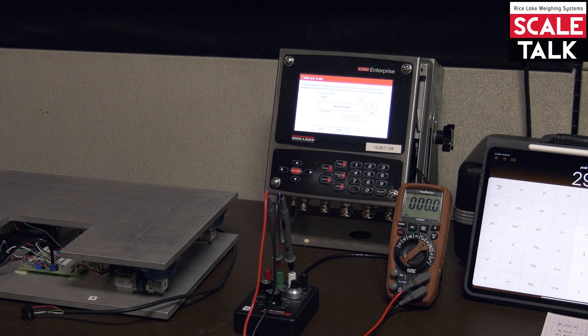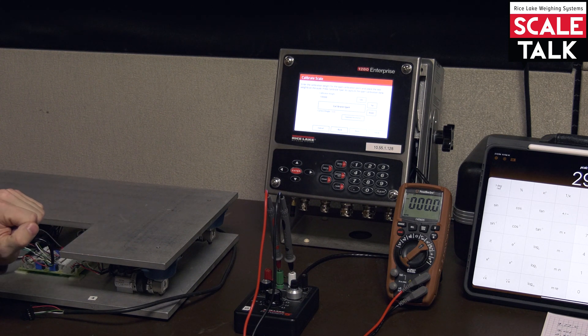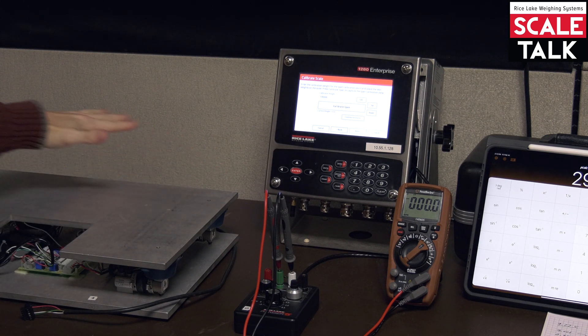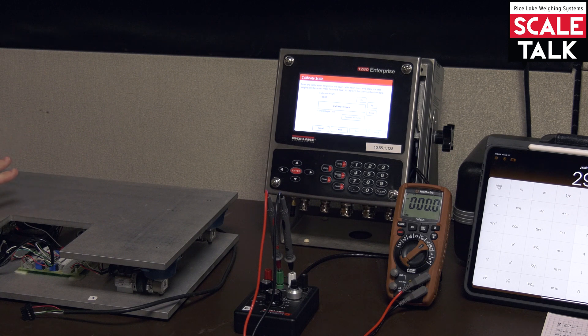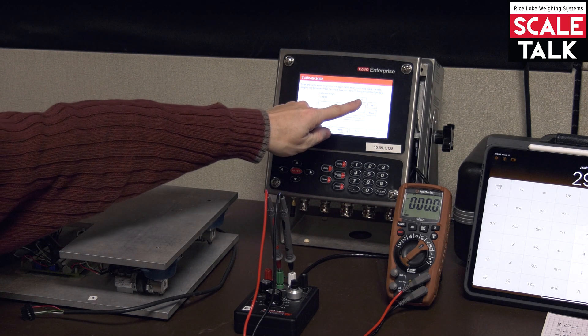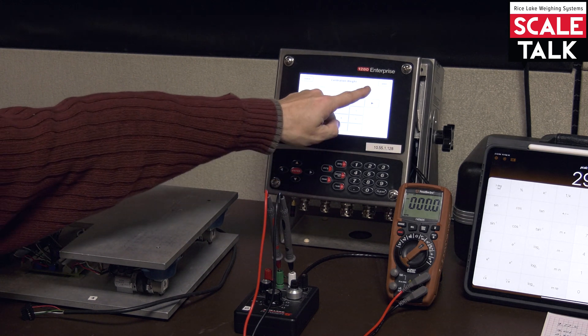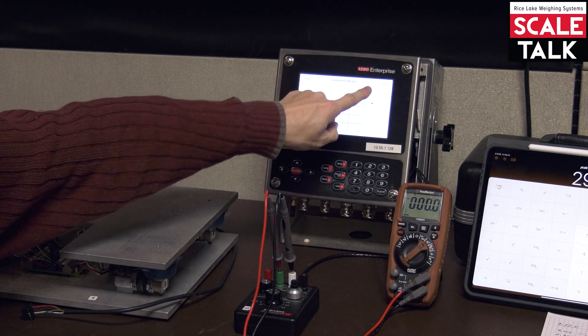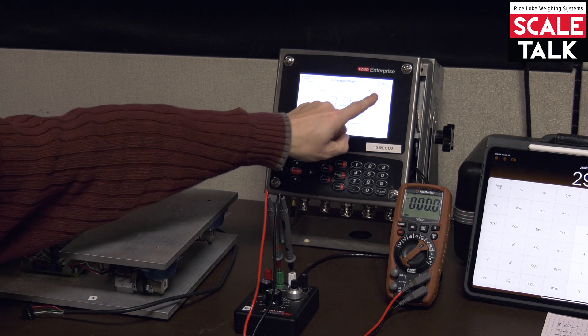And for our span remember this is a 50 pound scale. Even though we have a hundred pounds of build due to the four 25 pound load cells it's a 50 pound scale. That's how we're configuring this scale to be. So when we do our span calibration we're going to set that weight value to be 50 pounds. So we'll enter 50 pounds here.